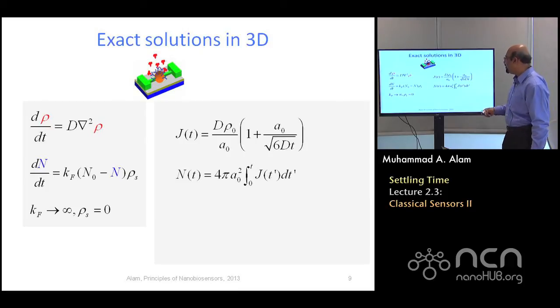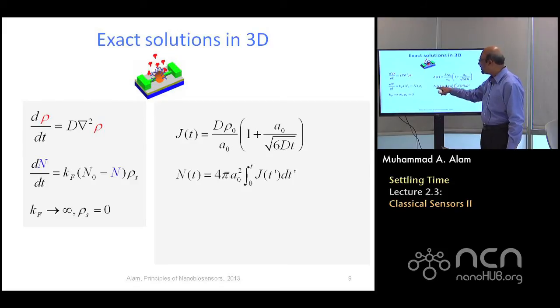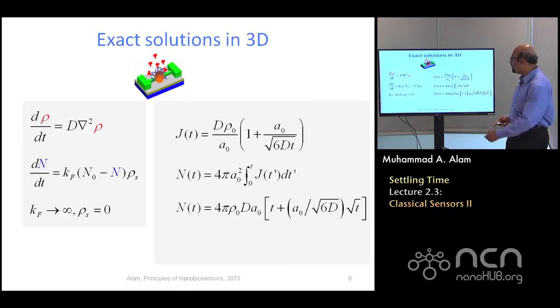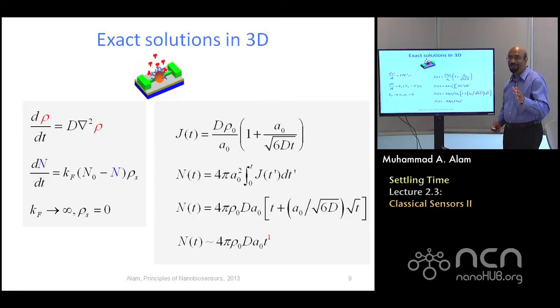You can integrate the whole thing to get the total number of particles that has been captured by the nanosphere sensor, and once you have integrated it out, there will be a complicated expression, but the bottom line is that this linear dependence, this a naught is a small quantity, so this will drop out, and you will see that the linear dependence with time is exactly reproduced. So, therefore, the simple approach we took in terms of diffusion equivalent capacitance, in fact, gives us the correct result.